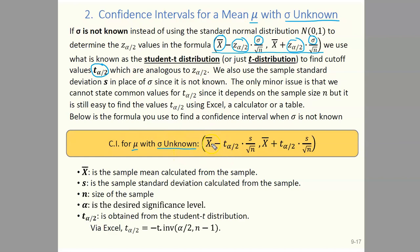So we have x bar, our sample mean, plus and minus t alpha over 2 times the sample standard deviation divided by the square root of n. It looks very much like the z-interval formula, but we've replaced the z's with t's and sigma with s — and that's it.